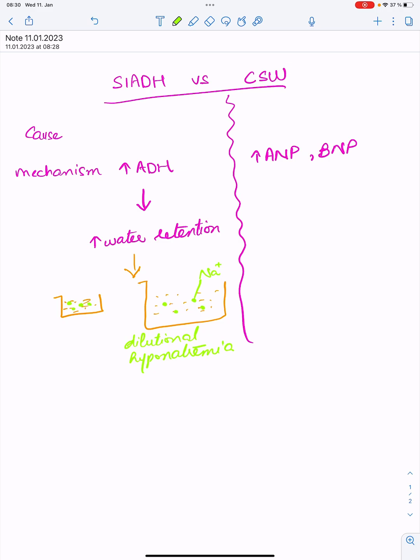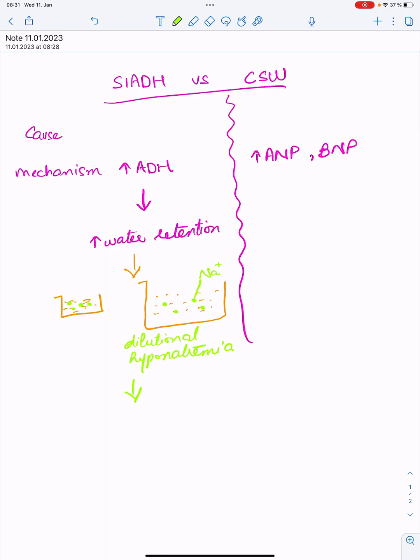And because there is reduced urine production, because of reduced water excretion in the urine, the urine is hyperosmolar.